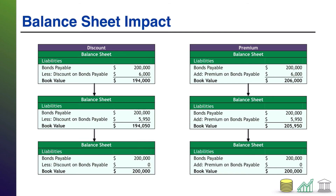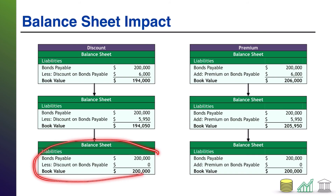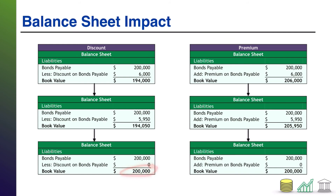Now, taking a look at this from the balance sheet perspective — here's the discount scenario. In the discount scenario, you have bond payable $200,000 and a discount of $6,000, which gives it a book value of $194,000. After that first monthly accrual, you're still going to have bond payable of $200,000, but the discount is now down to $5,950, which means your book value has gone up to $194,050. This is going to happen month after month until you reach the final month of the bond's life, at which point bonds payable is $200,000 with no discount remaining for a book value of $200,000. You then pay off that payable and the whole thing is gone.